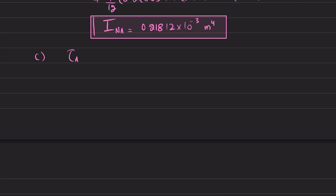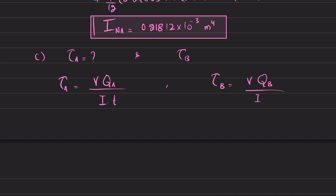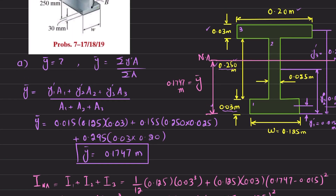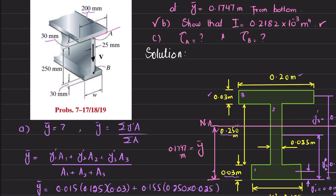In part C, we find shear stress at points A and B. The shear stress formula is τ = VQ / (It). For point A: τ_A = VQ_A / (I·t). For point B: τ_B = VQ_B / (I·t). V = 15 × 10³ N. We first find Q, where Q = ȳ' · A.